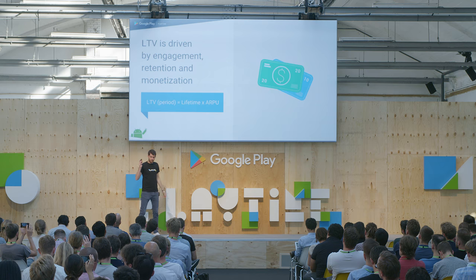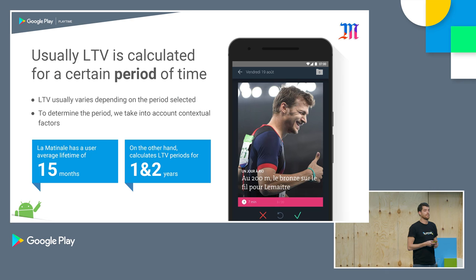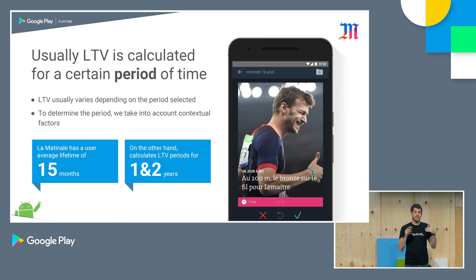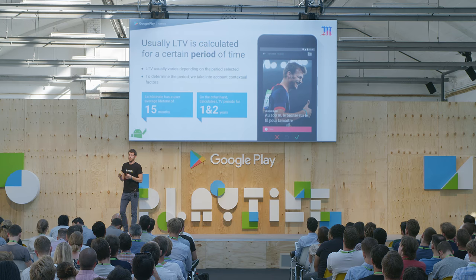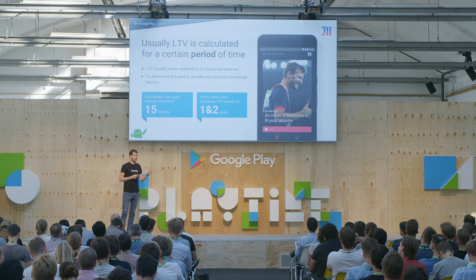Sounds fairly simple. Now let's look at the different variables. The lifetime value you get out of your equations will heavily depend on the time frame for which you calculate it. A user with a certain LTV for a 180-day calculation will have a very different value for a 365-day lifetime period calculation. What factors influence your lifetime period decision — I'll say LTV because I'm too lazy to say lifetime value every time.